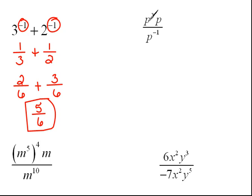Here we go. In this problem, we have p squared times p all over p to the negative 1. Now, we could simplify this first. We could actually do this two different ways, maybe more than that.